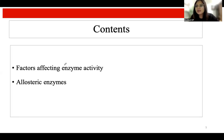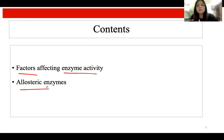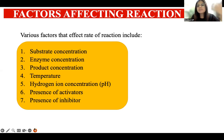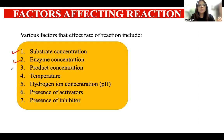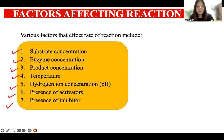Hello everyone, welcome back to the channel. In this lecture we will be discussing the different factors responsible for affecting enzyme activity, that is the rate of reaction, and also we will look at what allosteric enzymes are. There are several factors or parameters responsible for altering the rate of reaction, and these include substrate concentration, enzyme concentration, product concentration, temperature, pH, activators, and inhibitors.